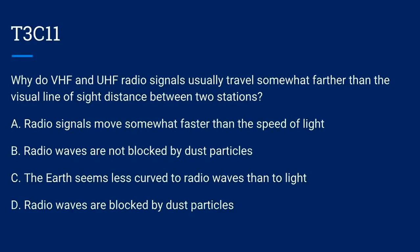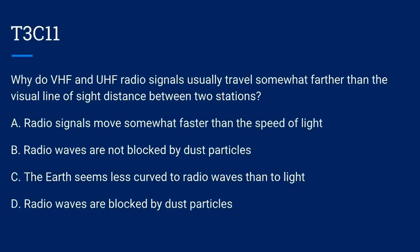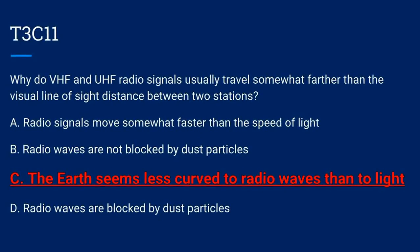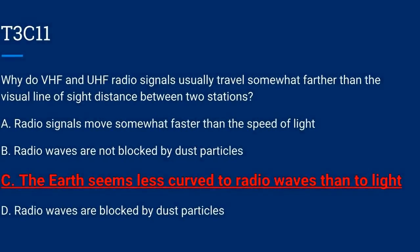T3C11. Why do VHF and UHF radio signals usually travel somewhat farther than visual line-of-sight distance between two stations? A. Radio signals move somewhat faster than the speed of light. B. Radio waves are not blocked by dust particles. C. The earth seems less curved to radio waves than to light. Or D. Radio waves are blocked by dust particles. The correct answer is C: the earth seems less curved to radio waves than to light.